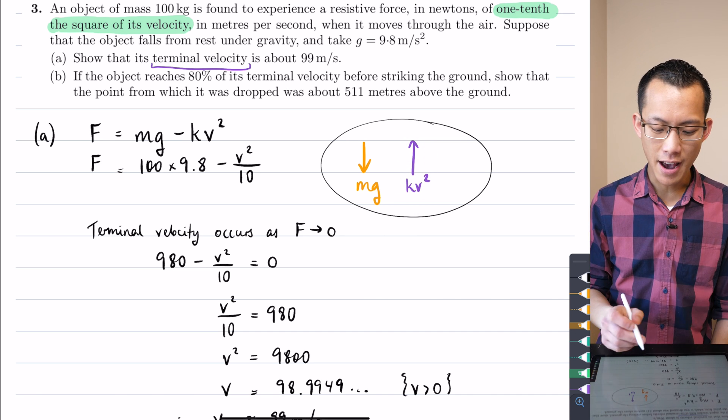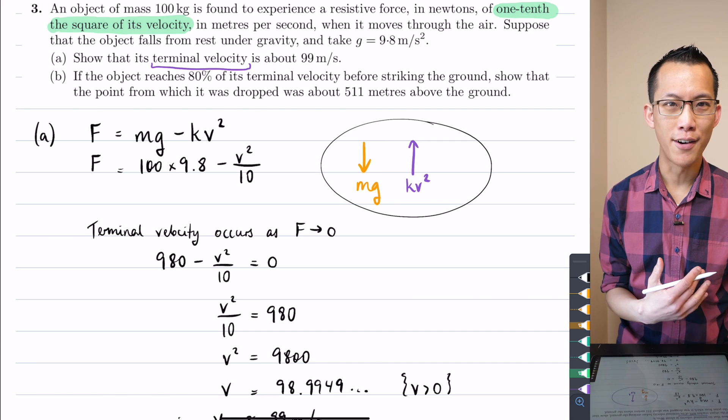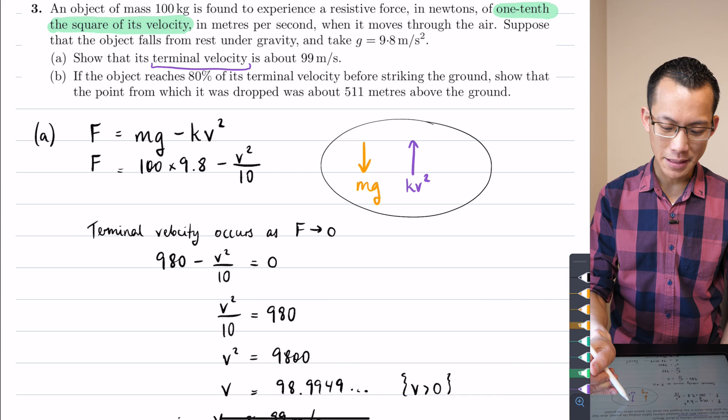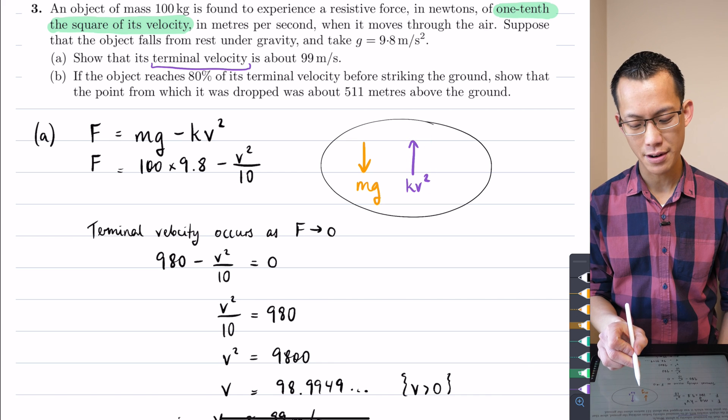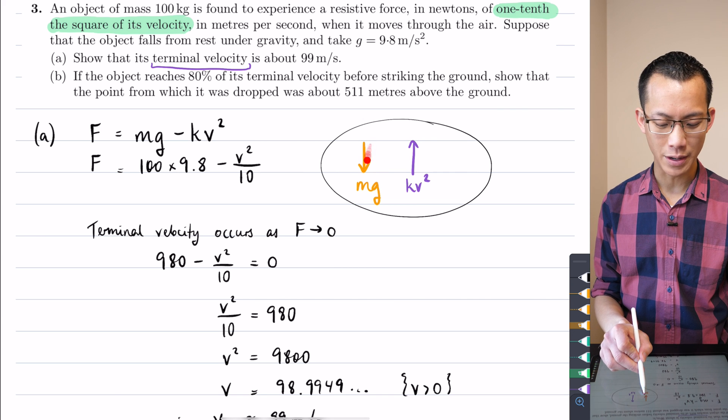but at the start it's zero because you're falling from rest. There's no resistive force on something that isn't moving to begin with, but this starts to increase and eventually it's going to increase until it gets arbitrarily close to this weight force that's going downwards.